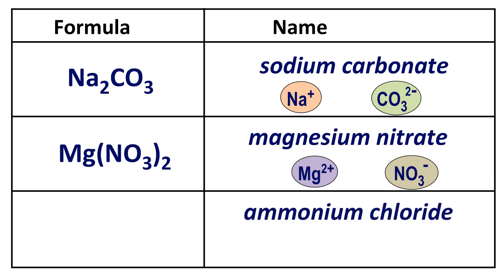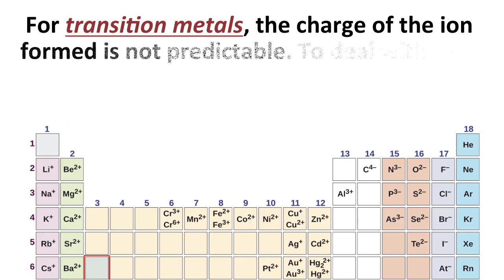Ammonium chloride, ammonium is NH4 plus, chloride is Cl minus, one of each balances nicely, NH4Cl. We write the positive ion on the left, the negative ion on the right.